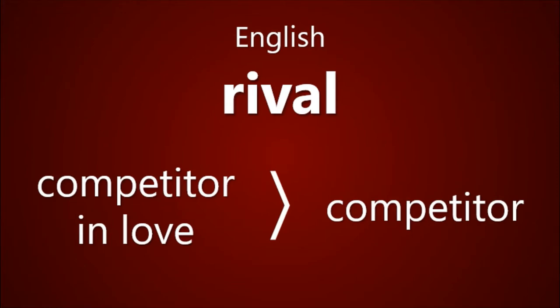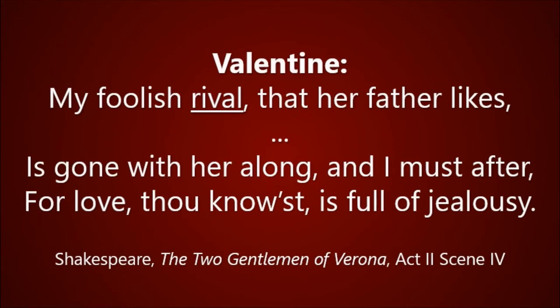William Shakespeare used rival in this sense when the word was still quite new to the English language. In his play The Two Gentlemen of Verona, one character, Valentine, decides to pursue Sylvia, the woman he loves, who has gone off with another man, his rival. Valentine says: "My foolish rival that her father likes is gone with her along, and I must after, for love, thou knowest, is full of jealousy."